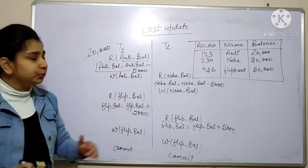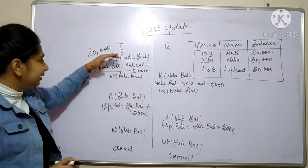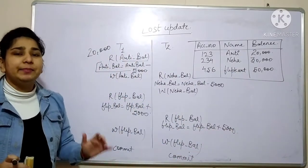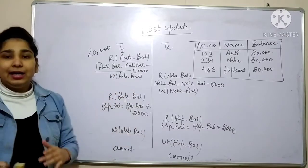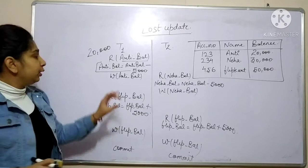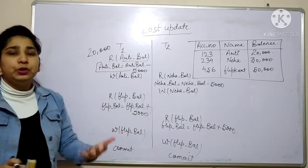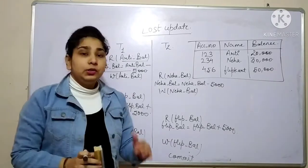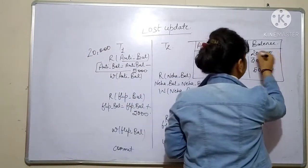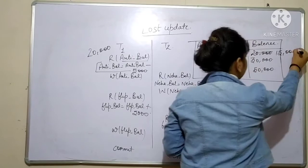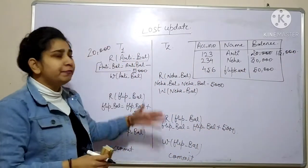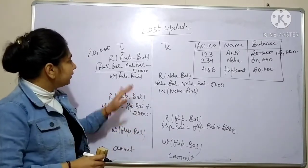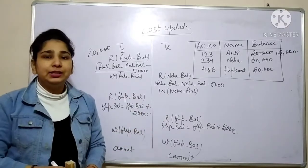Now I want to reflect this change in the database. I want to update the database value, so I am using the write operation — you can use an UPDATE query in SQL for this. I am updating the value to 15,000. Now after performing this update operation, our timer is out, so we switch from transaction T1 to transaction T2.